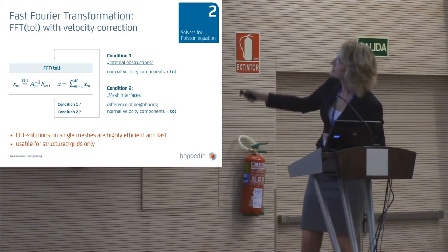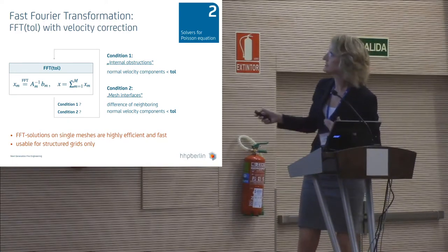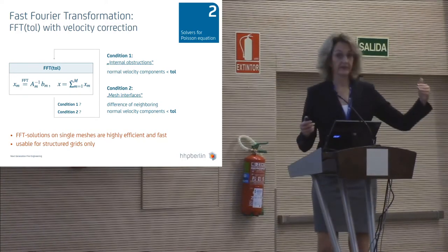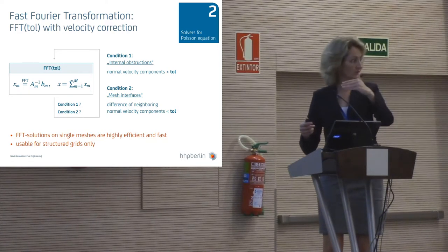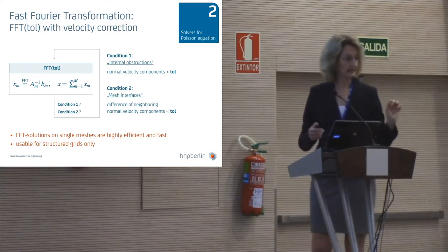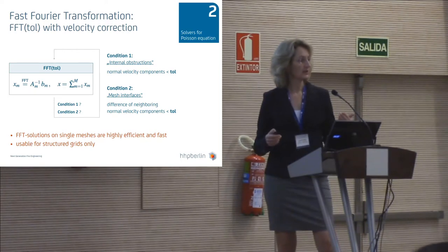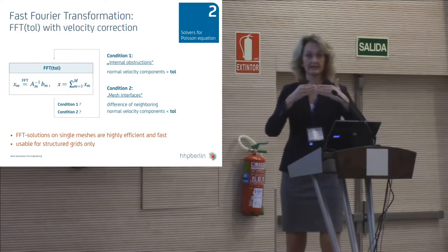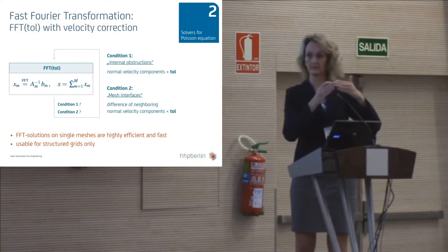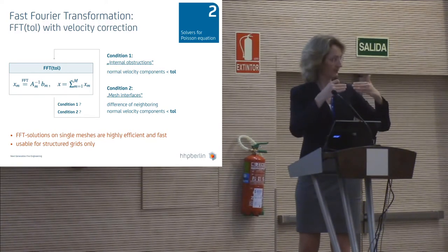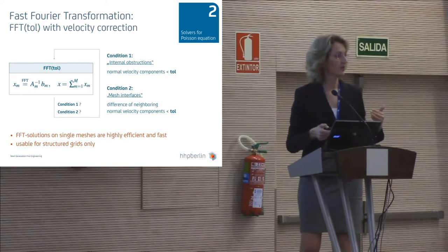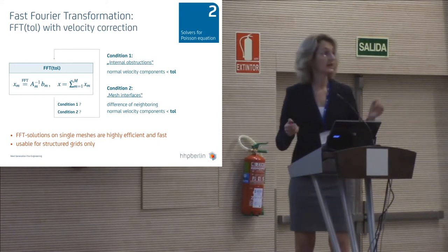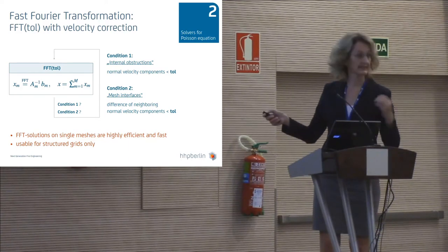We have to do an iteration surrounding those local solutions, and this iteration must take care of two conditions. First, it must drive the normal velocity components towards zero along the internal solids. Second, if we additionally use a mesh decomposition, the flow from one mesh into the next must be smooth — the velocity components must be matching. So the difference between the normal velocity components must be less than a certain tolerance, which you specify in your input, and you must iterate until this tolerance is reached.